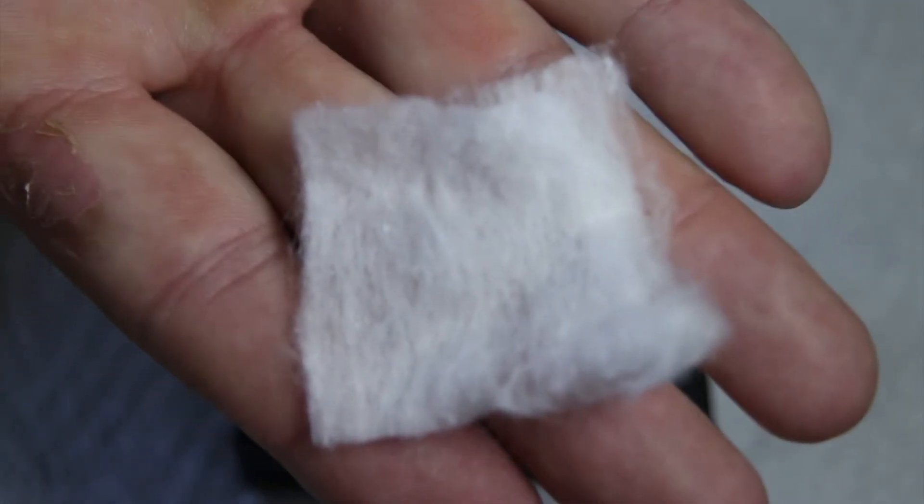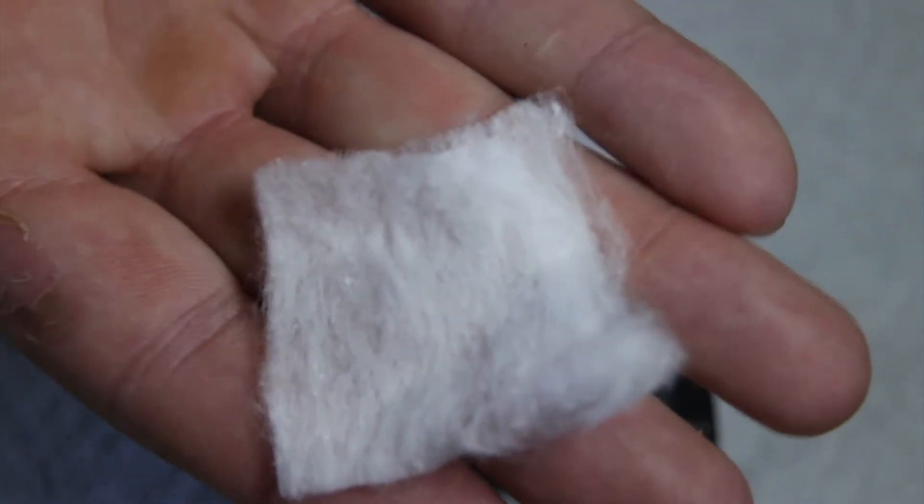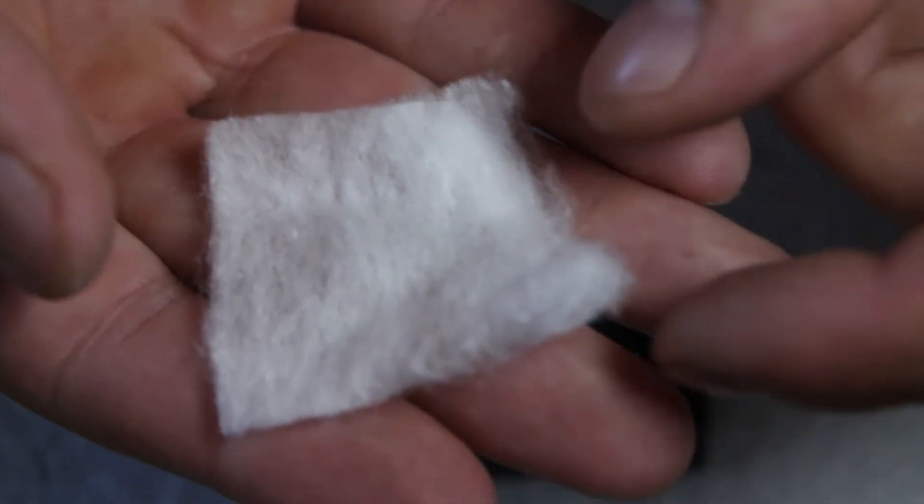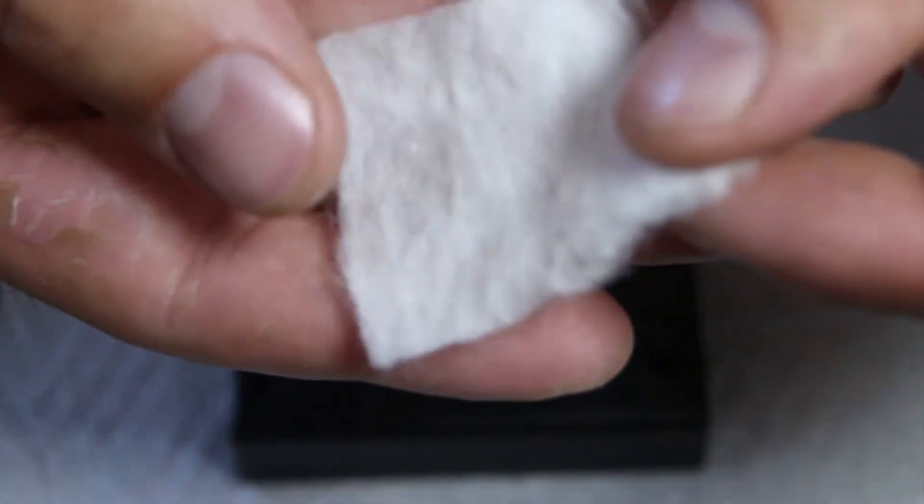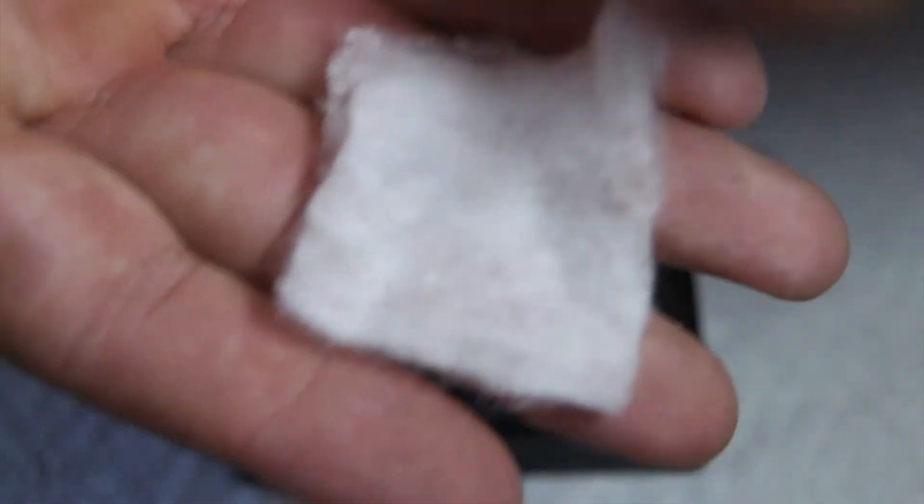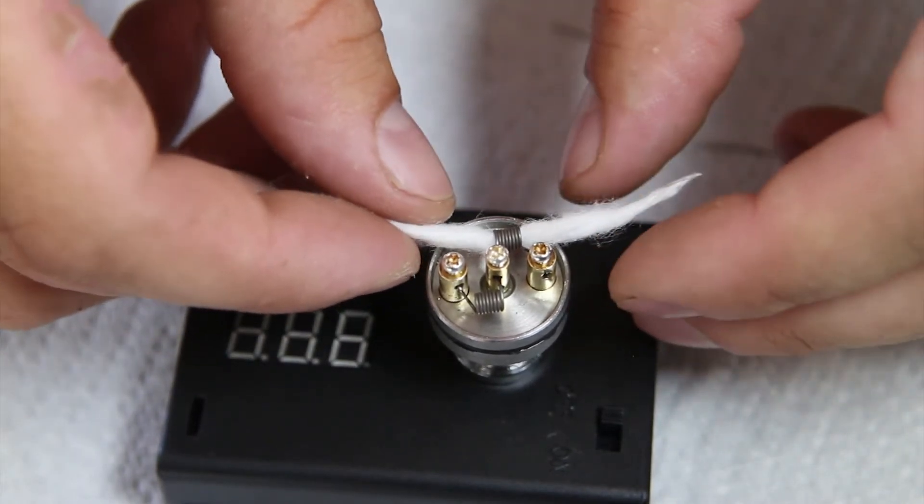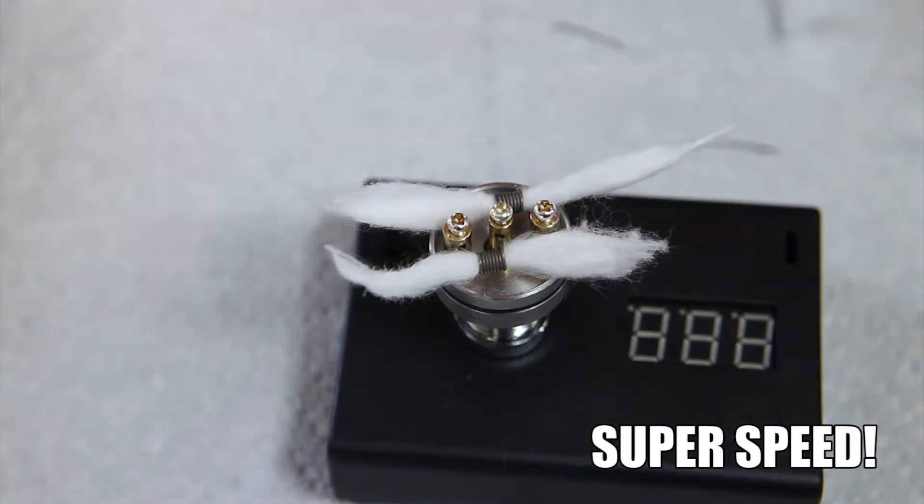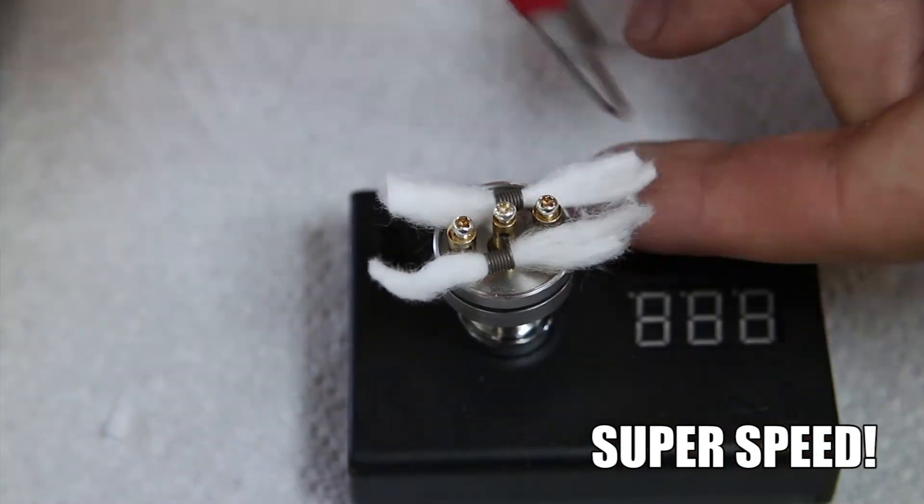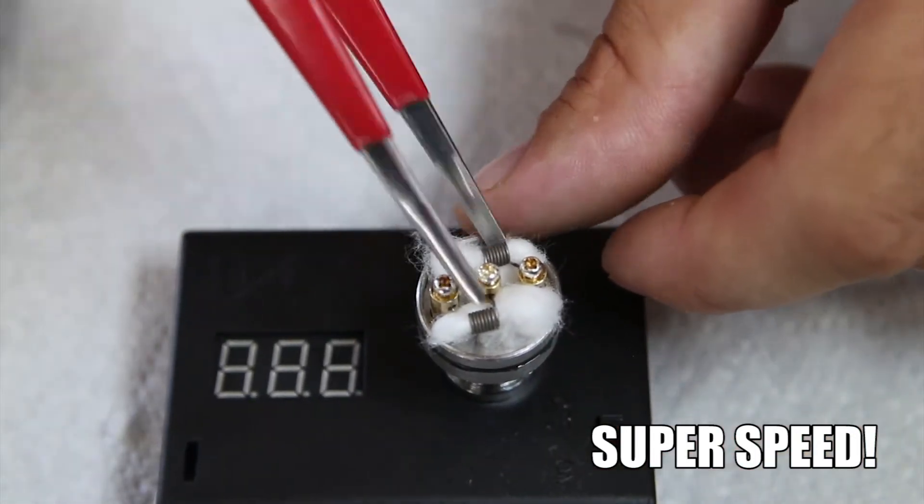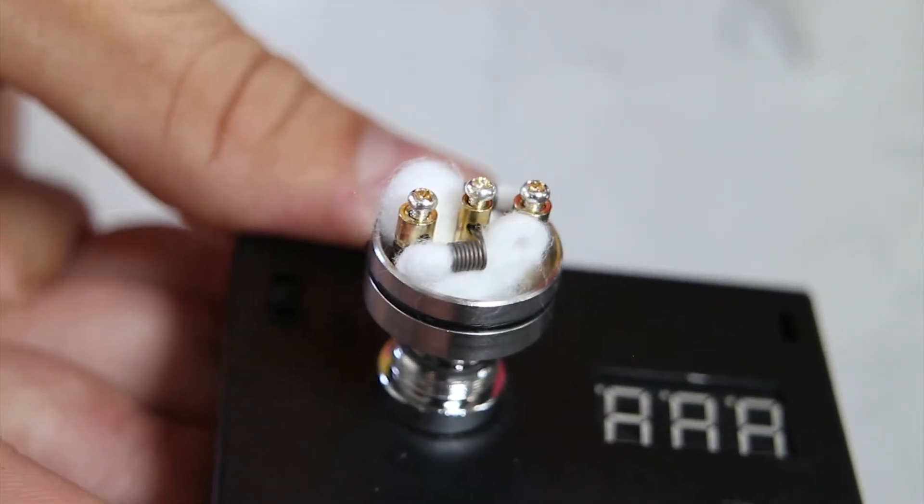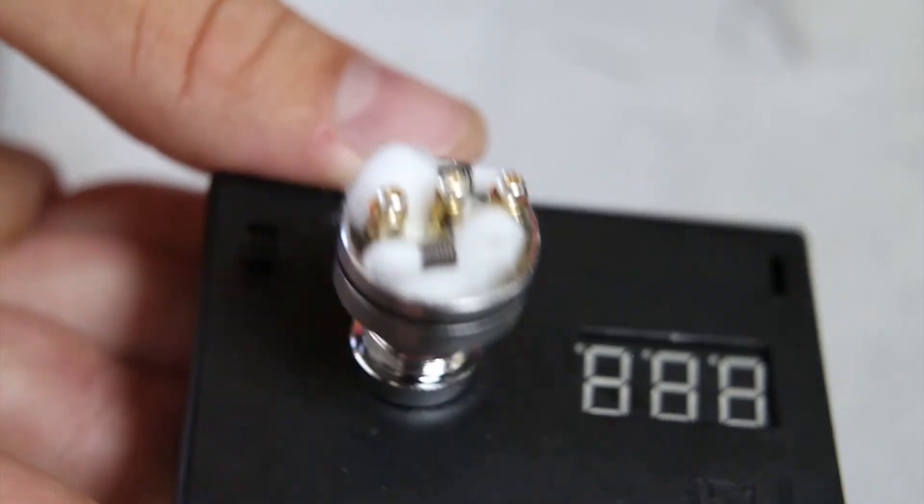So here is the Japanese cotton they sent me. It's pre-cut into these little 4cm x 4cm squares which is really convenient. Usually I make wicks that are probably too big so this is going to definitely cut down on the size of my normal wicks. But I think it should work out just fine. Let's tear off a couple of strips. Alright, here she is all wicked up. Let's drip some of that TROP on here.